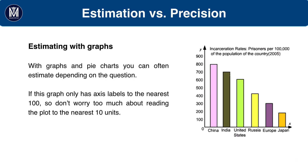With graphs, you can also estimate or work by inspection. For example, in this graph they give the units to the nearest 100, so you only need to read to the nearest 25 at the very minimum. You could probably even get away with reading the graph to the nearest 50 here.